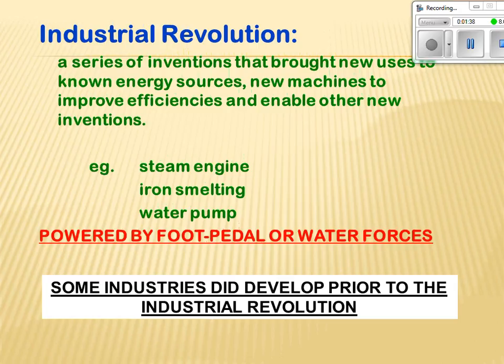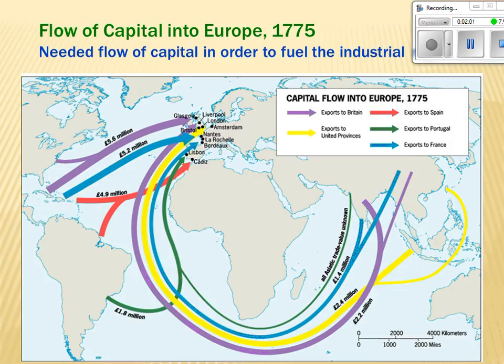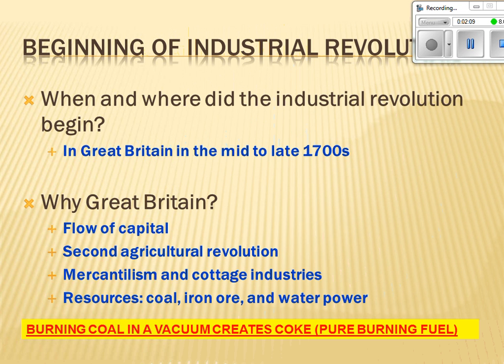The steam engine was very important, along with iron smelting and the water pump — all huge innovations for the industrial revolution. It began in Great Britain in the mid to late 1700s. A lot of it has to do with the fact that Great Britain had so many colonies. The flow of capital from all of those colonies into Great Britain and also into Western Europe in general caused a great deal of money, capital, and ideas to spur on the industrial revolution.